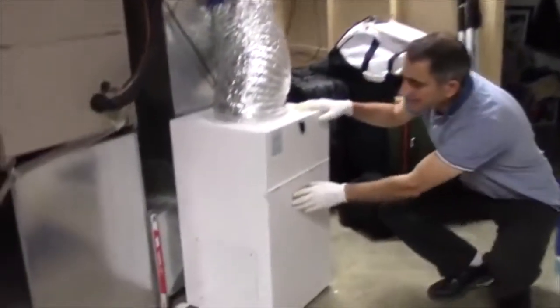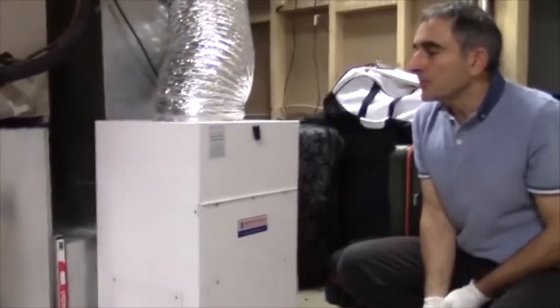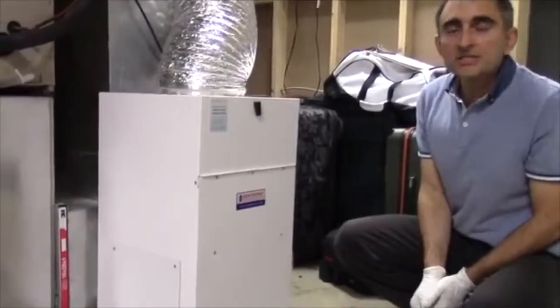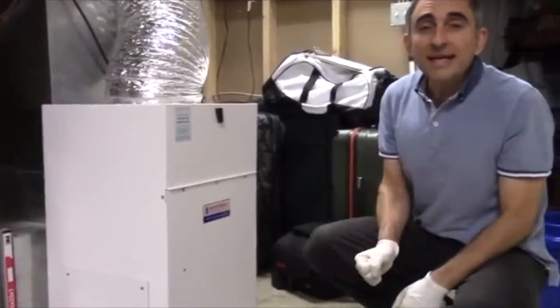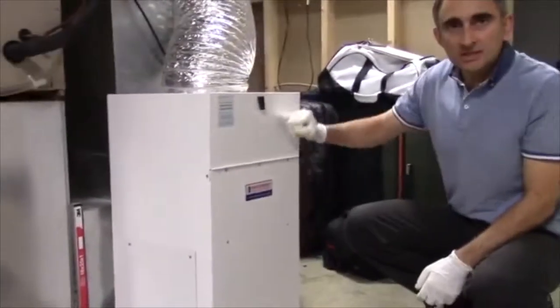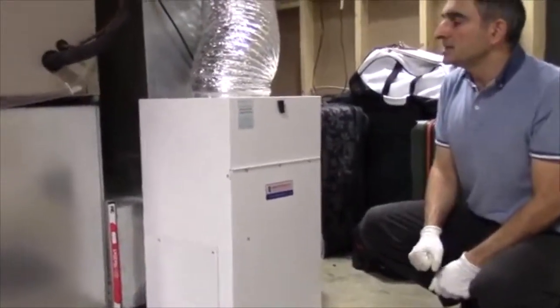Our customer in this case has the larger abatement air cleaner. This is called the CAP 1200. The majority of our customers probably have a CAP 600, so you're going to see one less filter in the top slot.